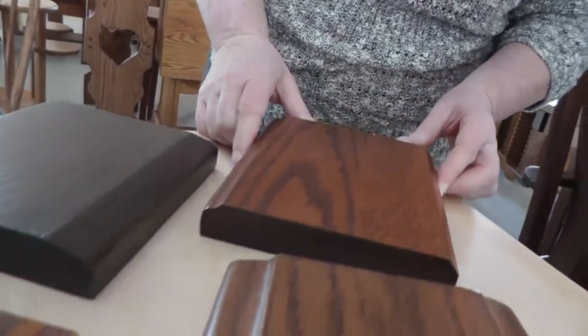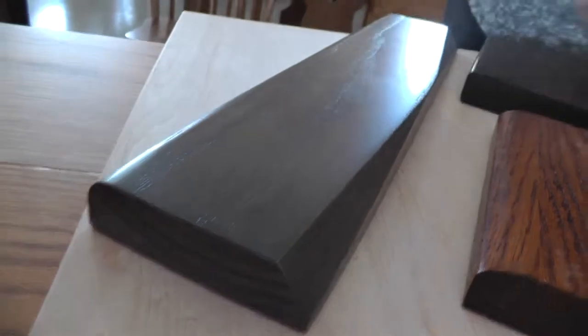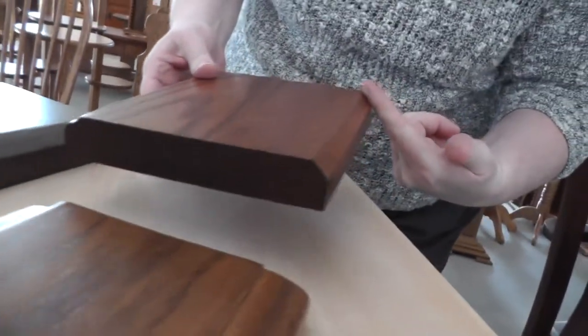So we have the chamfer twice, one with the wing style and then this is just a standard chamfer where it's the same angle all the way across the table edge.